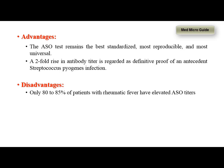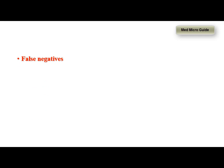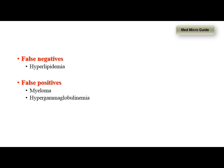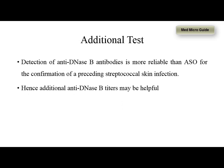The disadvantages of the test are that only 80 to 85% of patients with acute rheumatic fever show elevated ASO titers. The remaining 15 to 20% of cases show false negative results. ASO titers will not be raised in skin infections. False negative results are seen in hyperlipidemia, and false positive results are seen in myeloma, hypergammaglobulinemia, liver disorders, and autoimmune diseases with elevated rheumatoid factor. In addition to ASO titers, performing anti-DNAse B antibody detection will help confirm preceding streptococcal skin infection.